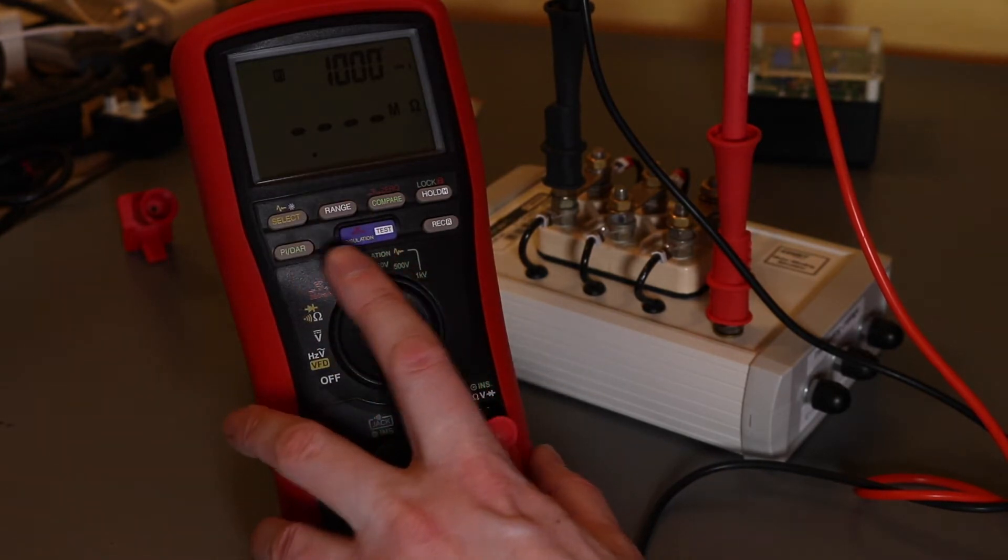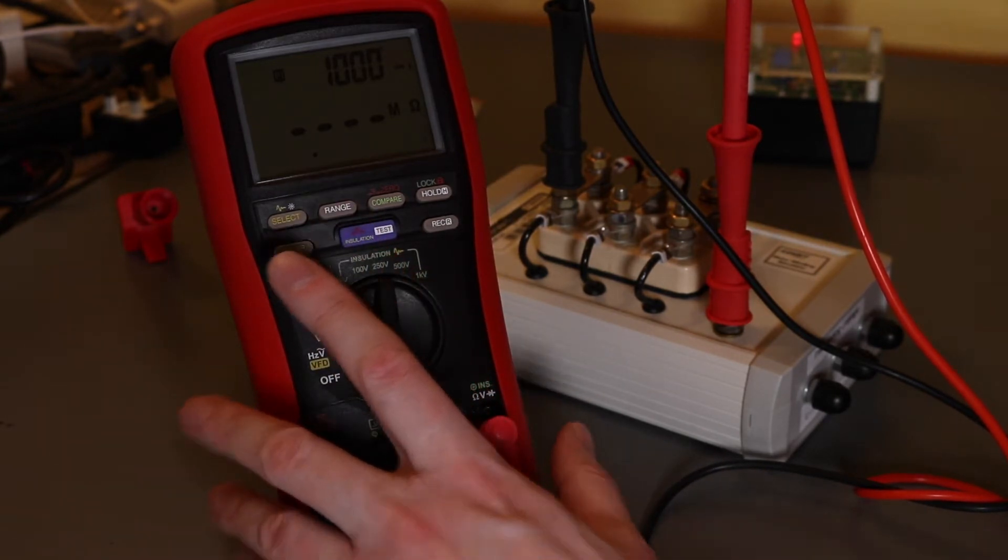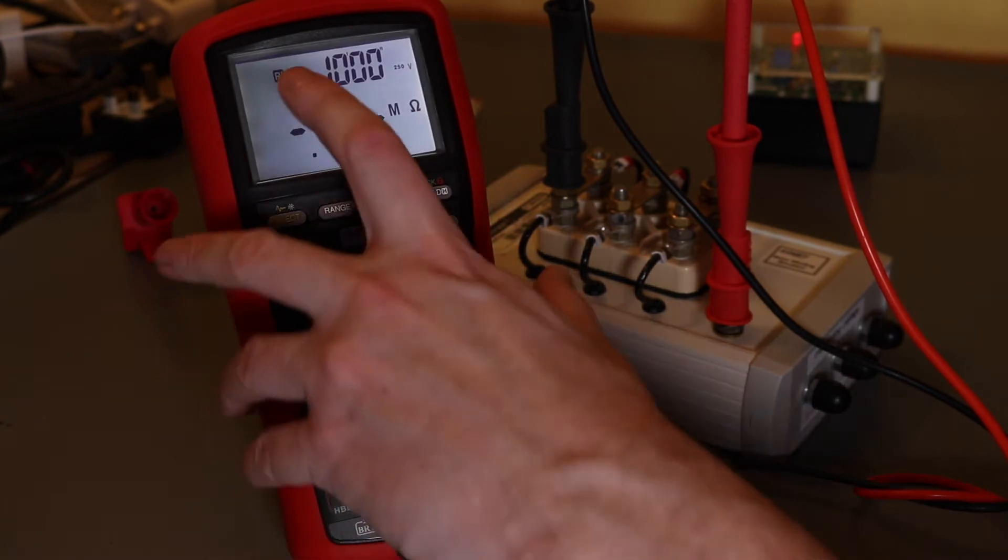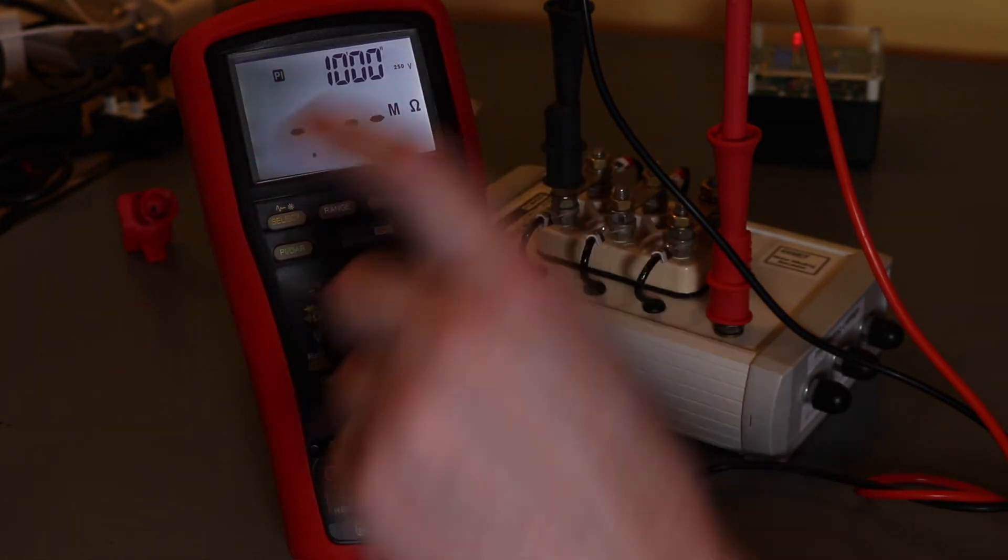This doesn't lock on even though I've selected Pi and DAR. Let's put the light on so we can see. So you can see we've set up to Pi, 10 minutes, 250 volts.